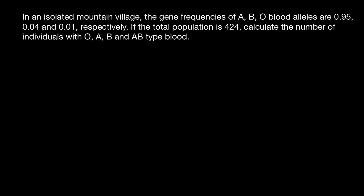Most of you are used to solving Hardy-Weinberg problems using the equation where the frequency of three genotypes made by two alleles equals p² + 2pq + q², and all this equals one or one hundred percent.